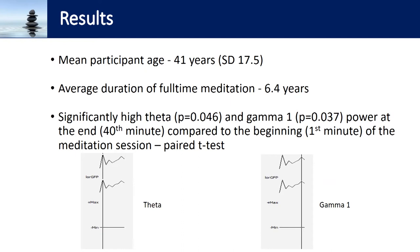Results: the mean participant age was 41 years, and the average duration of full-time meditation of these monks was 6.4 years. The first important finding was high theta and gamma 1 power, or current density, at the 40th minute — that is the end of the meditation — as compared to the beginning, the first minute of meditation. The bottom two graphs show the EEG frequency: the left-hand side is the theta peak, and the right-hand side is the gamma 1 peak.